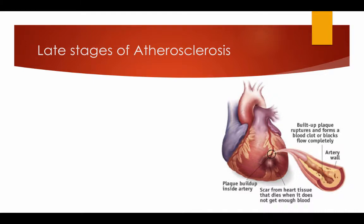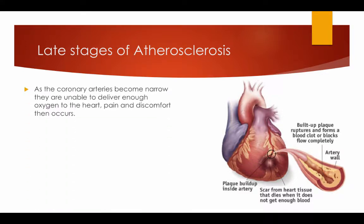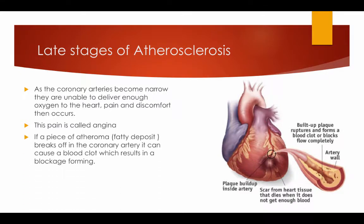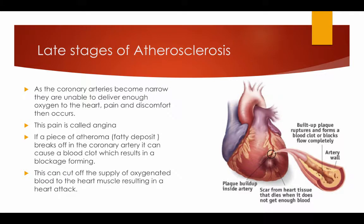In the later stages of atherosclerosis, as the coronary arteries become narrow, they are unable to deliver enough oxygen to the heart, and pain and discomfort then occurs. This pain is called angina. If a piece of atheroma breaks off in the coronary artery, it can cause a blood clot, which will result in a blockage forming. This can cut off the supply of oxygenated blood to the heart muscle, resulting in a heart attack.